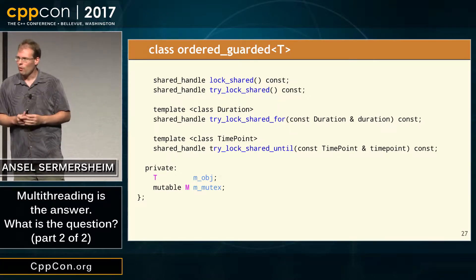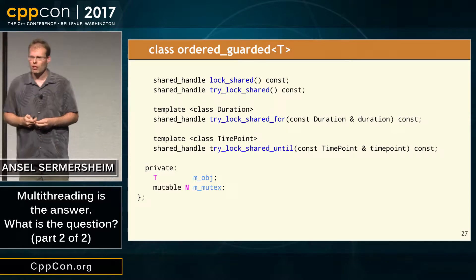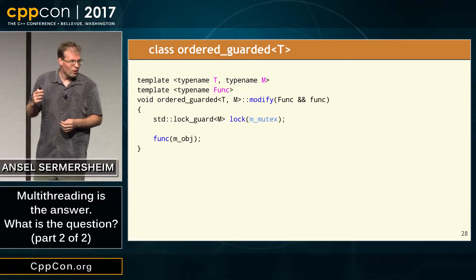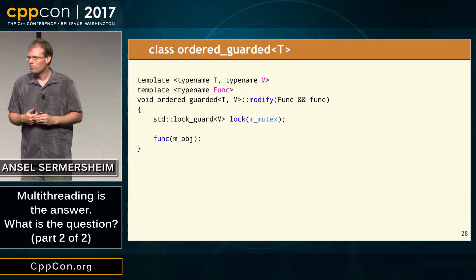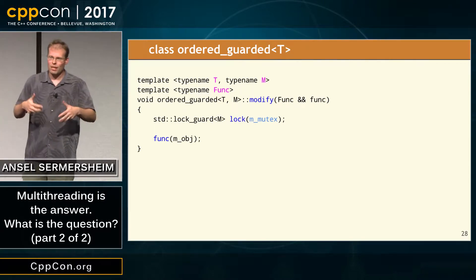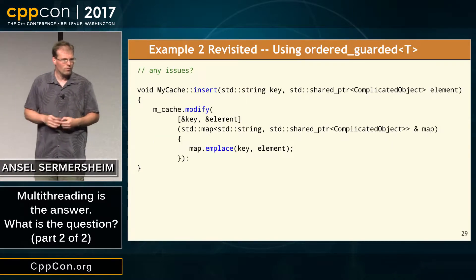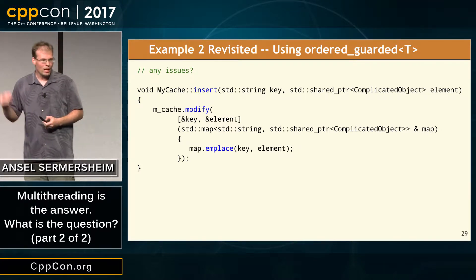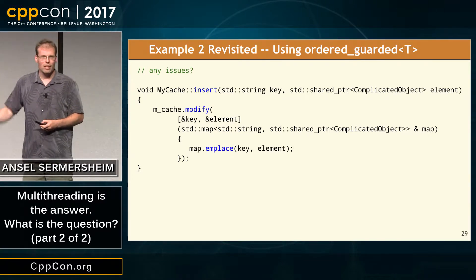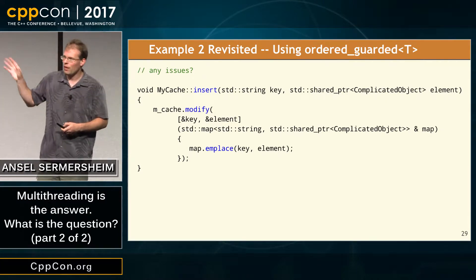Let's look at the implementation of modify — it's just locking the mutex and then calling the function. Not complex code, but by wrapping this inside the functionality of the class, we can make more guarantees about threading behavior. If I redesign the cache example using OrderedGuarded, it's slightly more complex because I have to pass in a lambda, but I can reason about the behavior in a way I couldn't previously, because the locking is no longer in imperative code — it's a side effect of the way I'm modifying the data.